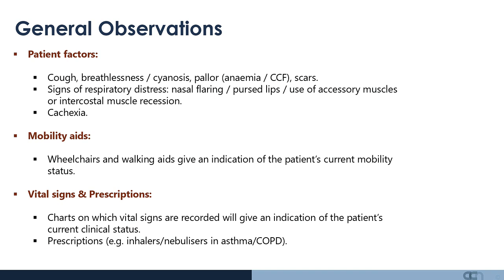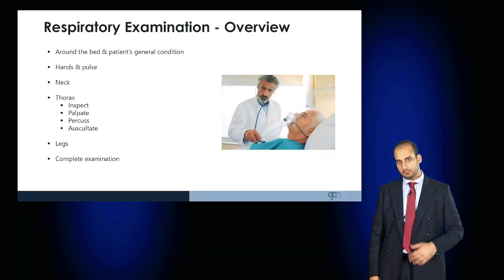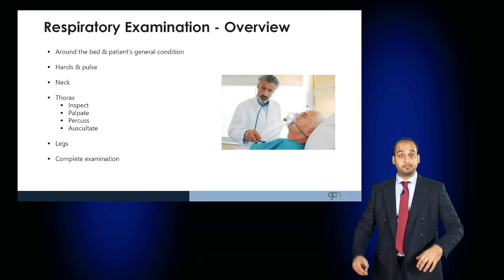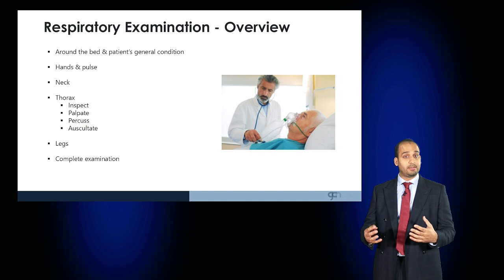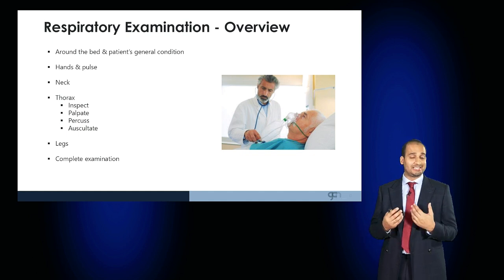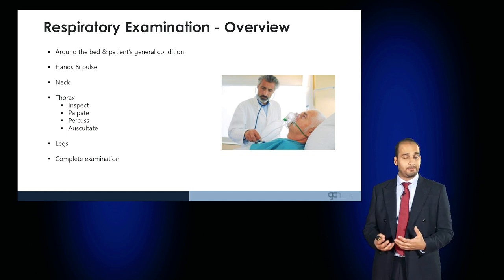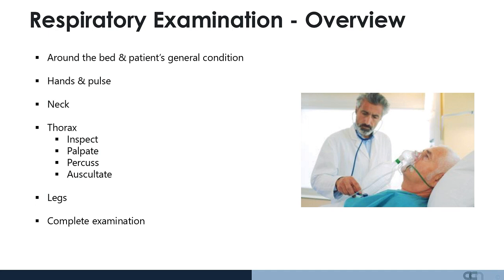If there are any vital sign charts or prescription charts, go through them in detail to determine what current level of management the patient is on. In general, once you've looked around the bed and observed the patient, you will examine the patient's hands, their pulse, the neck, the thorax anteriorly and posteriorly, the legs, and then complete the examination.